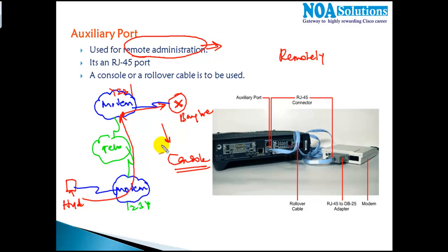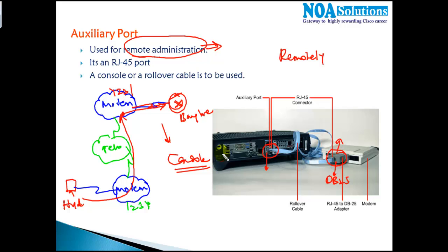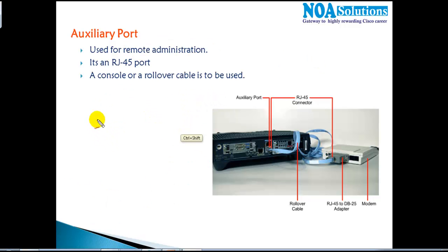To make remote administration work via the auxiliary port, you need a separate set of dial-up modems on both sides and someone to provide connectivity at the remote location. The same console cable is used, but with a different converter — typically a DB25 (25-pin) converter for the modem. The major drawback is that this connection is not reliable and doesn't support high-speed data transfers.